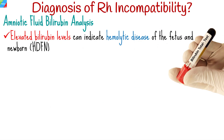In certain cases, analysis of the amniotic fluid may be performed to measure fetal bilirubin levels. Elevated bilirubin levels can indicate hemolytic disease of the fetus and newborn, a severe complication of Rh incompatibility. If Rh incompatibility is suspected or confirmed, fetal Rh typing can be done through invasive procedures like amniocentesis or chorionic villus sampling, involving sampling fetal cells for Rh typing.